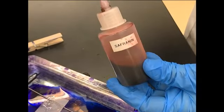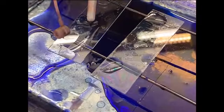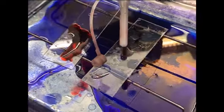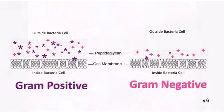A counterstain of safranin applied for one minute before rinsing colors those gram-negative cells pink. Of course, the safranin also stains the gram-positive cells, but the stronger crystal violet color will still be predominant.